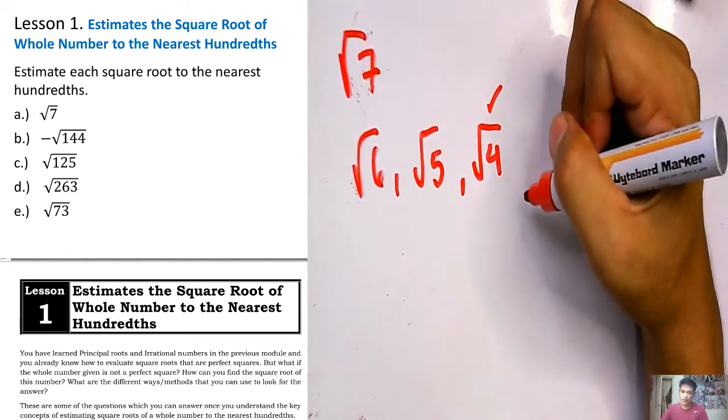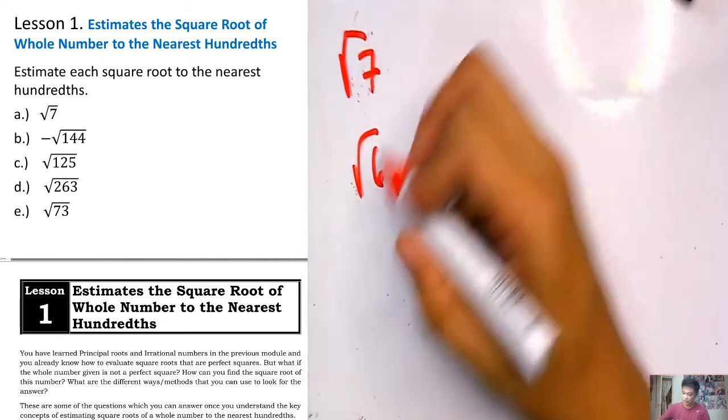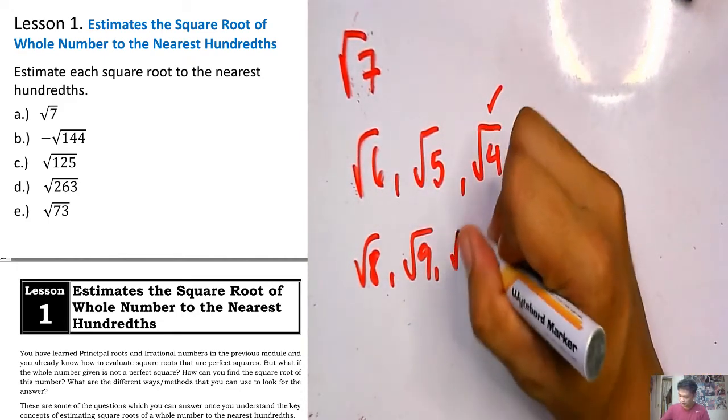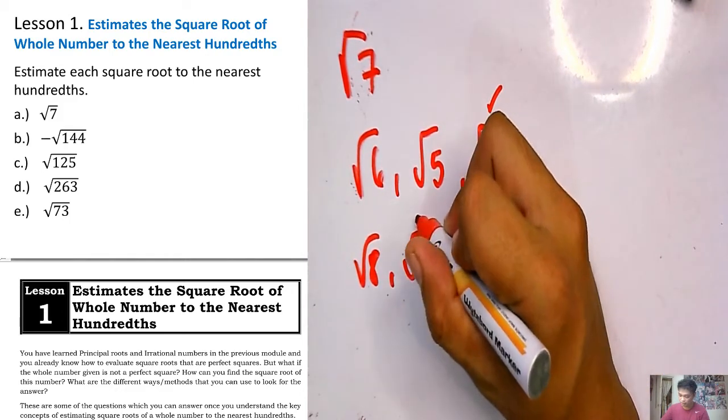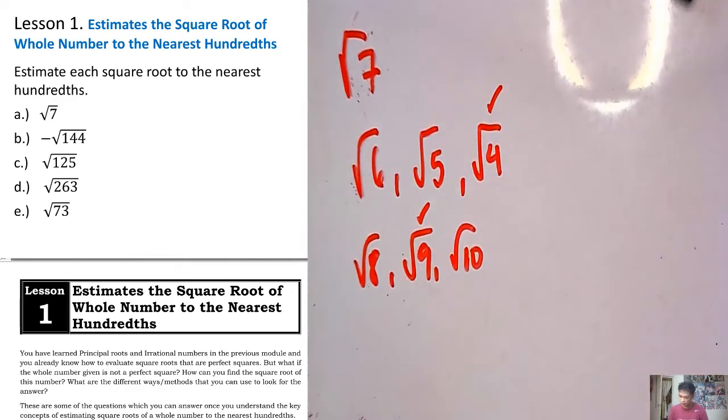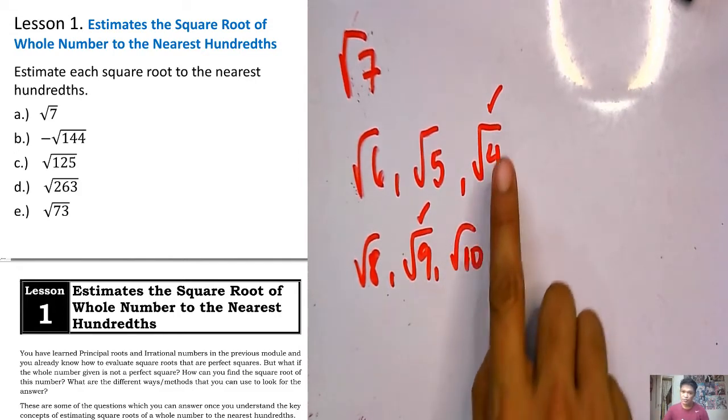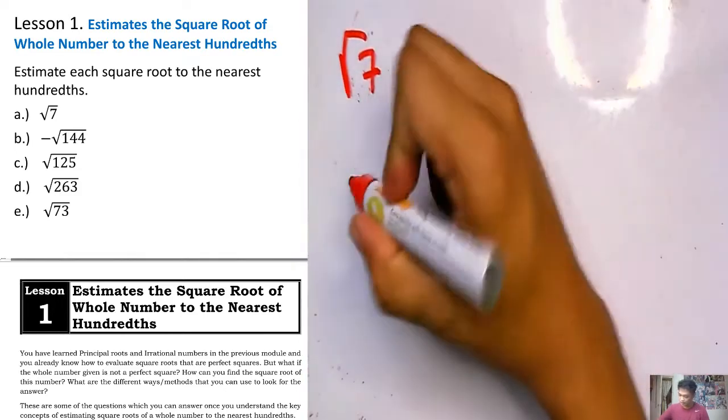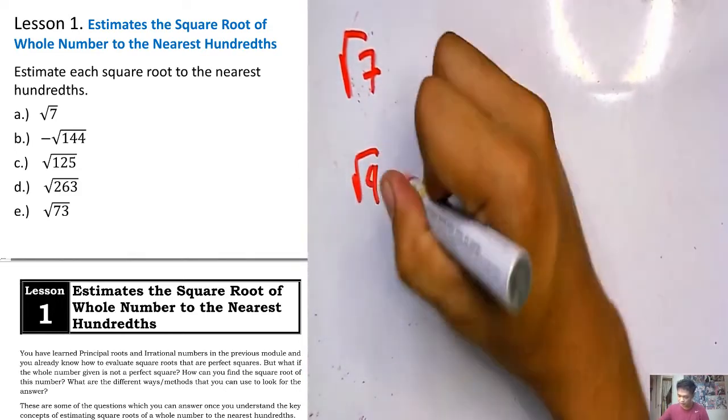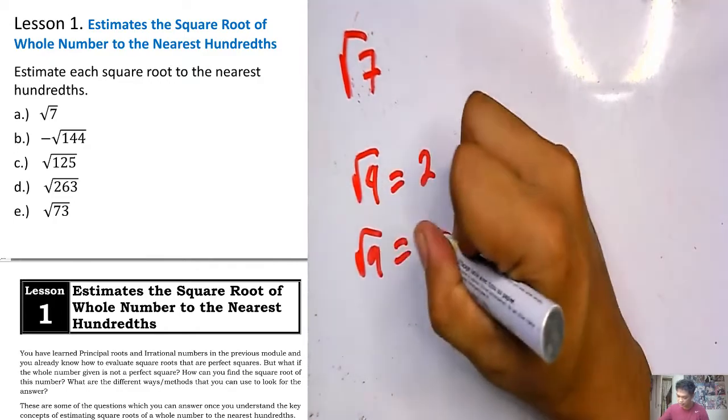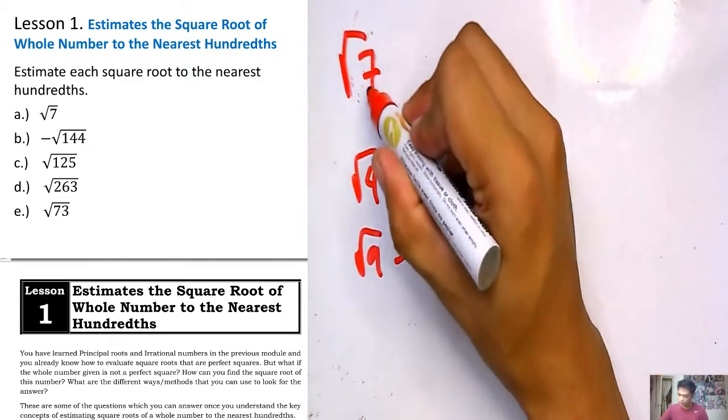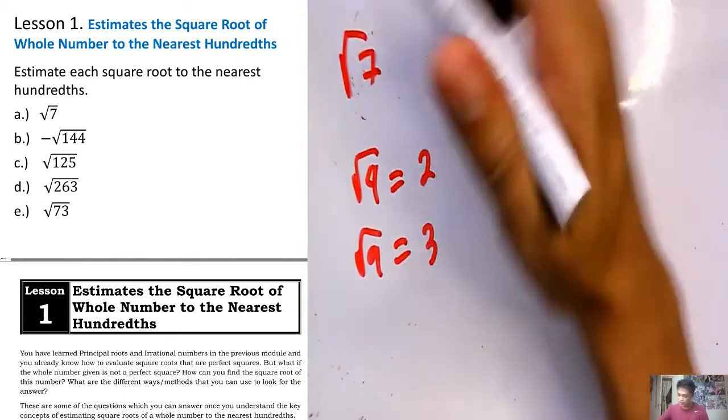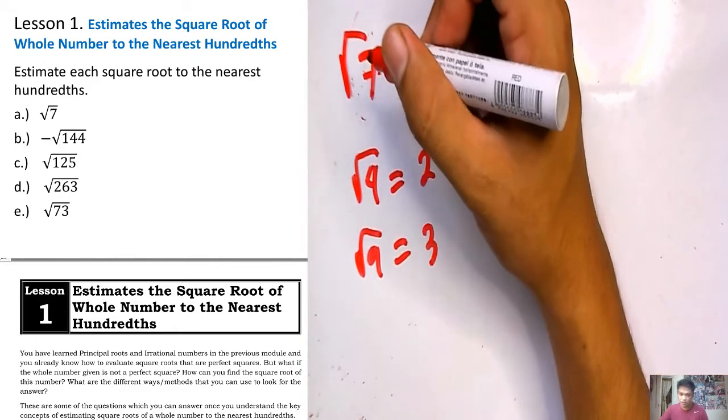Square root of 4 is a perfect square, so we end here. What are the numbers after 7? We have square root of 8, 9, 10, and we end on a perfect square number, square root of 9. So our focus now are on these two numbers, square root of 4 and square root of 9. Square root of 4 equals 2, square root of 9 equals 3. Which one is closer to 7? Is it 9 or 4? Of course it is 9.